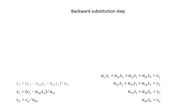Solving the second equation for x2, we have x2 equals the quantity c2 minus u24x4 minus u23x3, divided by u22. Since x3 and x4 are known, we can obtain x2. Since x2, x3, and x4 are known, we can obtain x1.